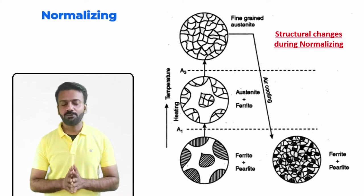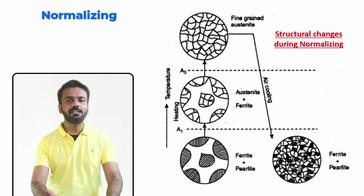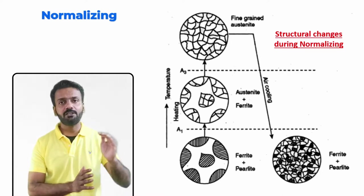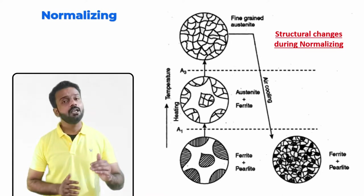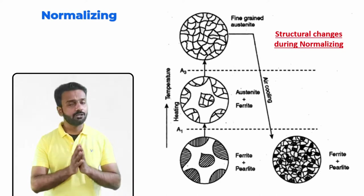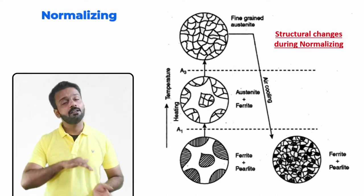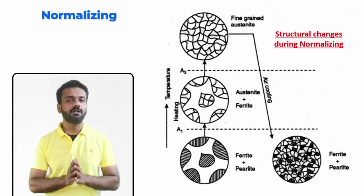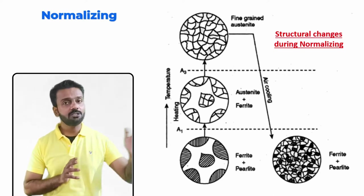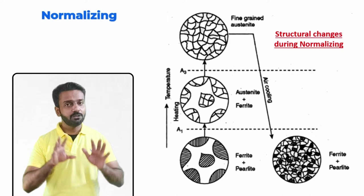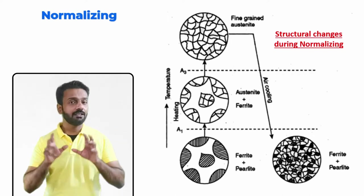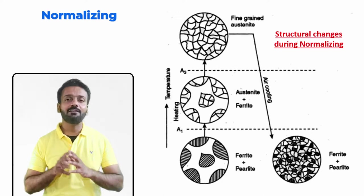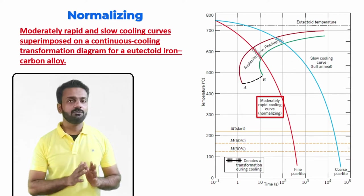This image shows the structural changes that happen during normalizing heat treatment. Initially at room temperature we have ferrite and pearlite. Above A1, heating gives austenite and ferrite. Above that — above A3 or Acm — the entire material becomes austenite. When we then cool the material in air, we get finer pearlite. This is similar to the annealing image shown in an earlier video, except that here the grains are very refined rather than coarsened.